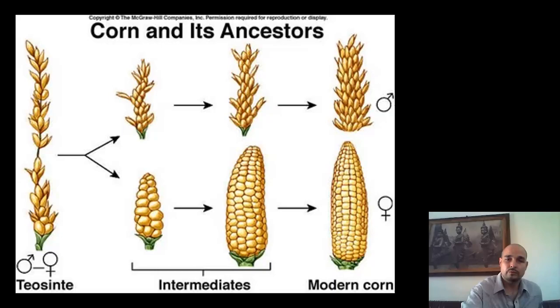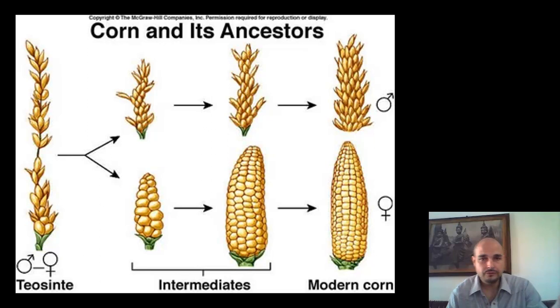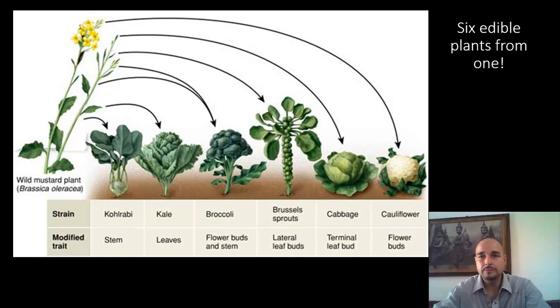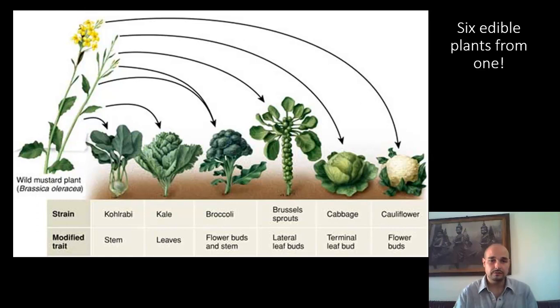Here's a picture of corn. On the left you can see what the ancestor of corn looked like, and if you follow this across you'll see that in the female version of the native corn, you'll eventually get to what modern corn looks like — the big cob with many, many kernels. This is the wild mustard plant with the yellow flowers, and there are actually six different edible plants that have been bred from this one plant: broccoli, brussels sprouts, cabbage, cauliflower, kale, and kohlrabi — each showing the modified trait or desirable feature that was bred for.